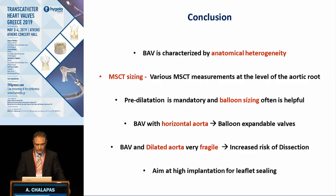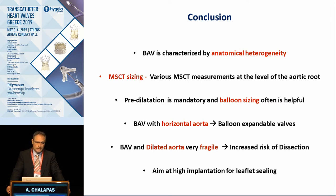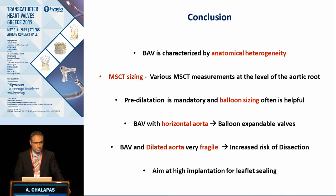Interestingly, new-generation valves have shown that they retain cylindrical configuration in this type of population, resulting in better outcomes with fewer complications and less need for a second valve. In conclusion: the bicuspid valve is not a rare situation; it is characterized by morphological and anatomical heterogeneity; CT is the gold standard to evaluate anatomy at different levels of the aortic root; balloon sizing is an important step in the sizing procedure; with a horizontal aorta, self-expandable valves must be used with caution; with dilated aortas at high risk of dissection, balloon-expandable valves must be used with caution especially when oversized; and we must always aim for high implantation for better leaflet sealing.